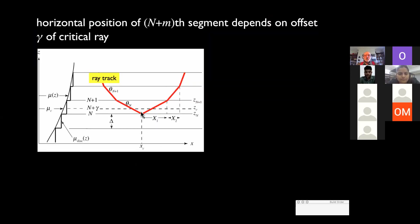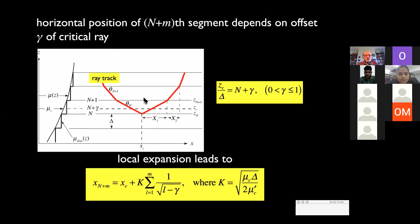The horizontal position of the capital N plus m-th segment depends on this offset gamma of the critical ray. You can do some analysis. You make a local expansion close to this point. And it turns out that the offset involves this critical value, plus a sum over all of the refractions thereafter. It involves the small delta, and involves the derivative of the refractive index, and it involves this particular sum.